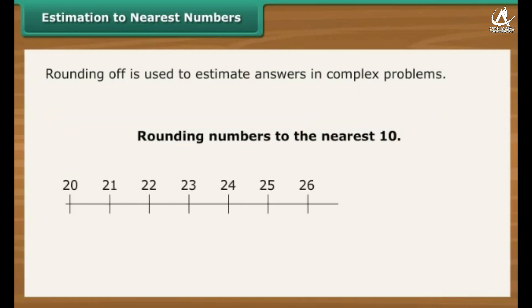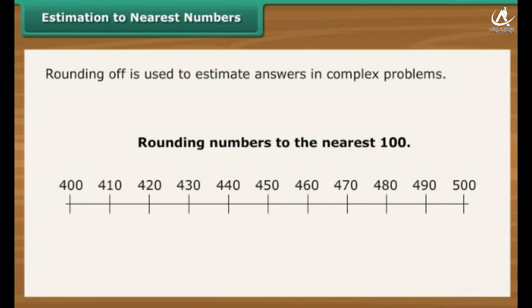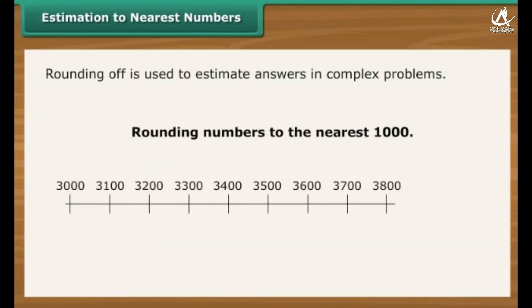Rounding numbers to the nearest ten means finding which ten they are nearest to. For example, 23 rounded to the nearest ten is 20. Rounding numbers to the nearest hundred means finding which hundred they are nearest to. For example, 423 rounded to the nearest hundred is 400. Rounding numbers to the nearest thousand means finding which thousand they are nearest to. For example, 3,800 rounded to the nearest thousand is 4,000.